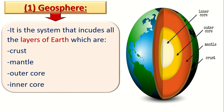The first layer, which we live on — the Earth's surface — is called the Earth's crust. Under the Earth's crust we have an orange layer which contains molten rocks. This layer is called the mantle. The mantle contains molten rocks.